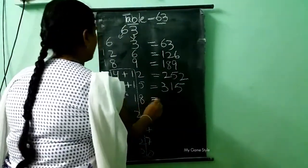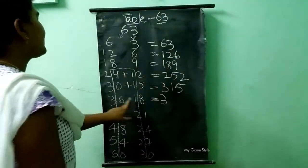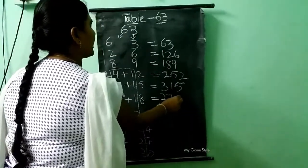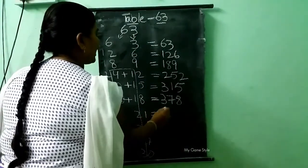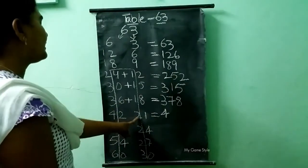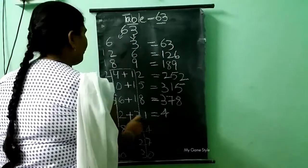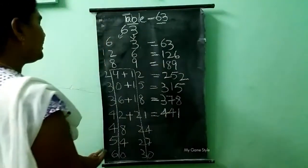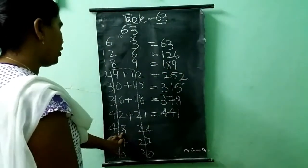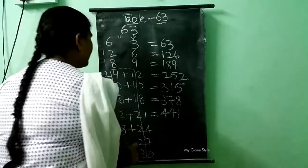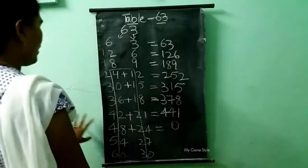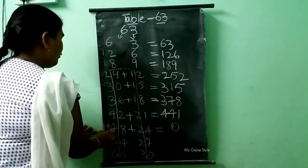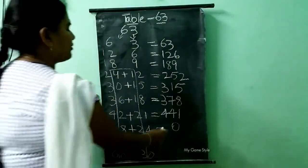Then here also the same thing — here it is 3, so we write 3 as it is. Then 6 plus 1 — how much, children? 7. Here 8 is there, so we write 8 as it is. Then here 4 is there, so we write 4 as it is. Then we need to add these both numbers: 2 plus 2 — how much? 4. So we write 4 here. And here it is 1, so 1 as it is. Then 8 plus 2 — how much, children? 10. So I am writing 0 in the middle and taking 1 as a borrow. Next we are adding: 4 plus 1 — how much? 5. So I am writing 5 here.